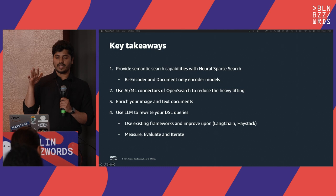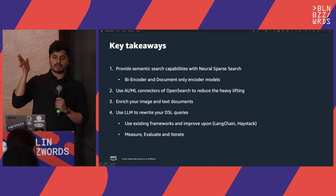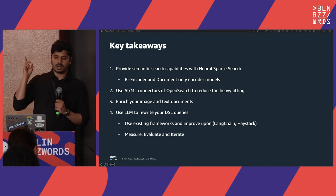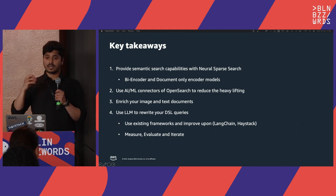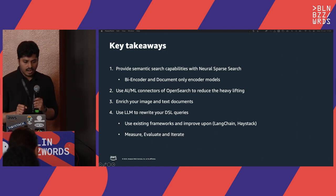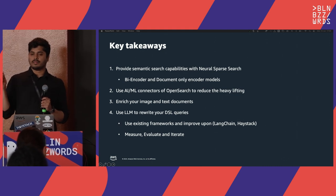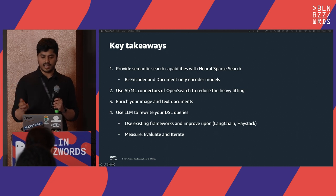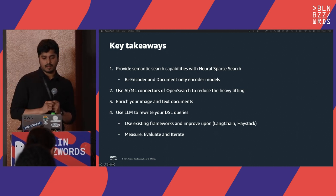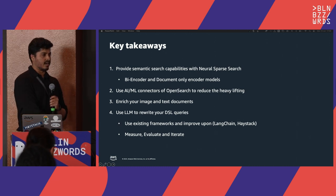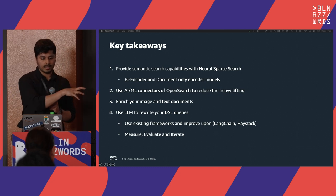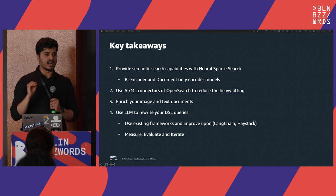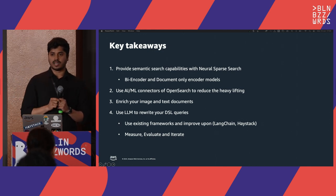Final key takeaways: try neural sparse search with the bi-encoder or document-only encoder models available with OpenSearch and SPLADE. Use the AI/ML connectors of OpenSearch — if you have your models in Amazon SageMaker, it's a direct connection without middleware components. Enrich your documents with entity recognition models or object detection models, then try to rewrite queries with large language models. Start with existing frameworks like Langchain; we started there and were able to improve the prompting and examples to reach a point that worked reasonably on our dataset. And importantly: measure, evaluate, and iterate. Have a ground truth dataset, measure, evaluate, and iterate until you reach your relevant benchmarks.